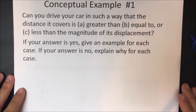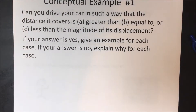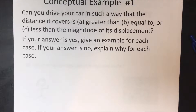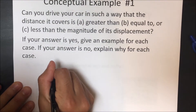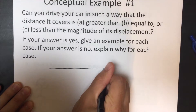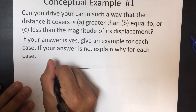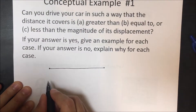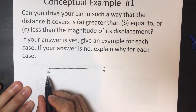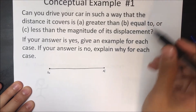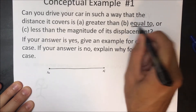Conceptual example number one: can you drive your car in such a way that the distance it covers is greater than, equal to, or less than the magnitude of its displacement? If you drive in a straight line, the distance you covered and your displacement — from initial to final position — are going to be the same. So yes, you can have distance equal to displacement.